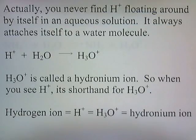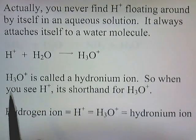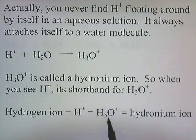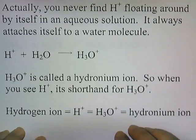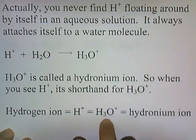You'll never find H+ floating around by itself in an aqueous solution — it always attaches itself to a water molecule. Anytime H+ pops up in water, it immediately attaches itself to a water molecule to form H3O+, which is called a hydronium ion. So when you see H+, it's shorthand for H3O+. The word hydrogen ion means H+, and since most chemistry problems occur in a water solution, the H+ will attach itself to a water and turn into H3O+. A lot of times, if you see the term hydrogen ion, they really mean hydronium ion.